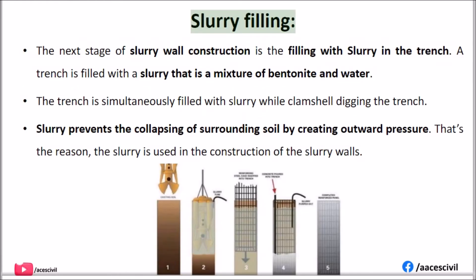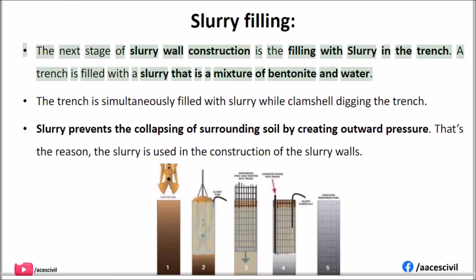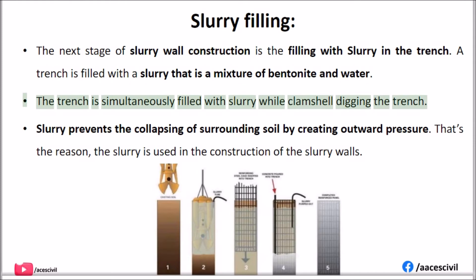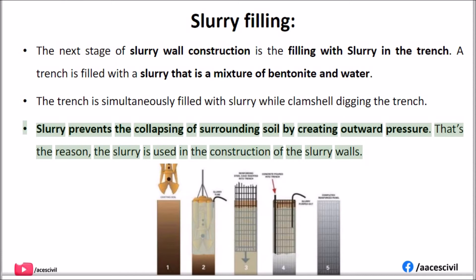Slurry filling: The next stage of slurry wall construction is filling the trench with slurry. The trench is filled with slurry, which is a mixture of bentonite and water. The trench is simultaneously filled with slurry while the clamshell is digging. Slurry prevents the collapsing of surrounding soil by creating outward pressure, which is the reason slurry is used in the construction of slurry walls.